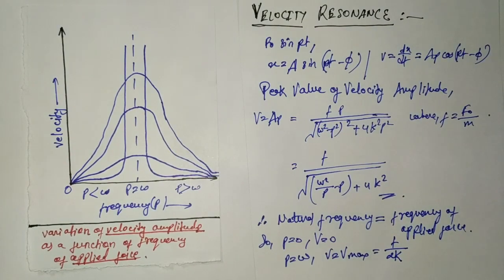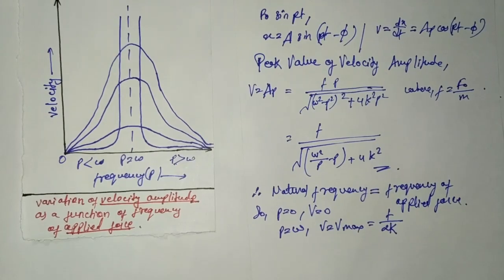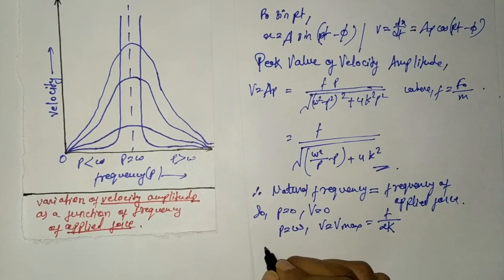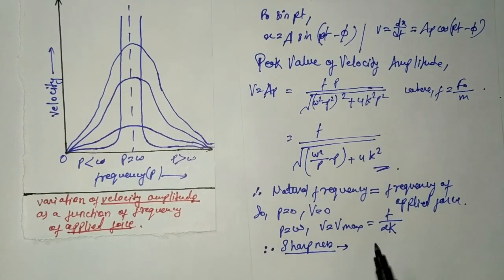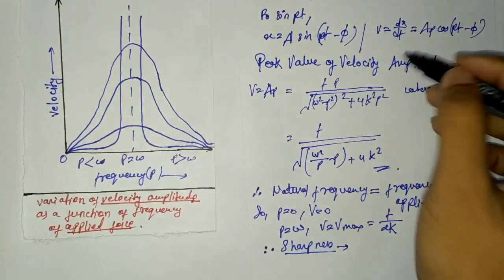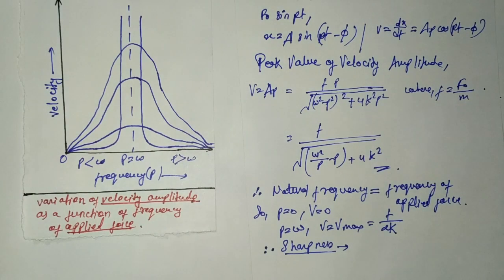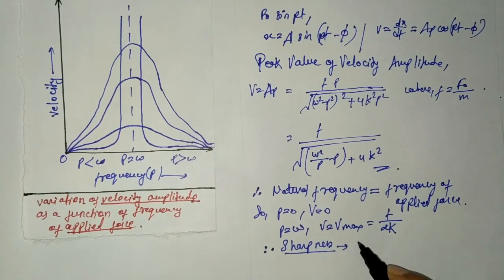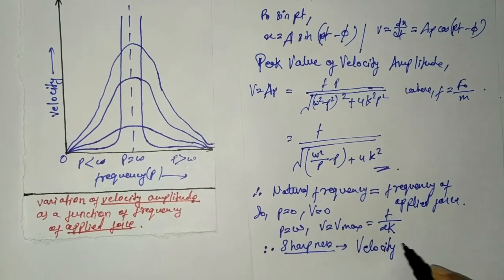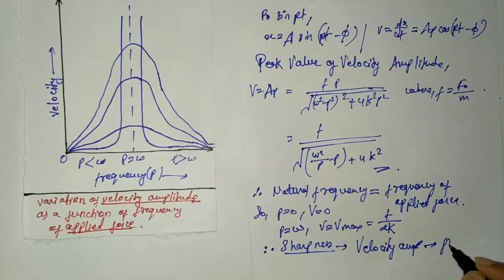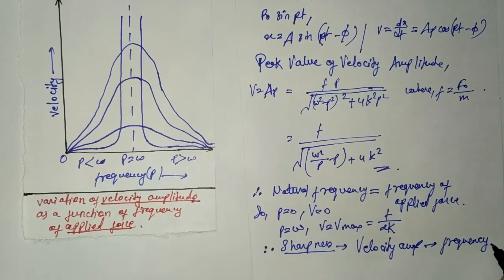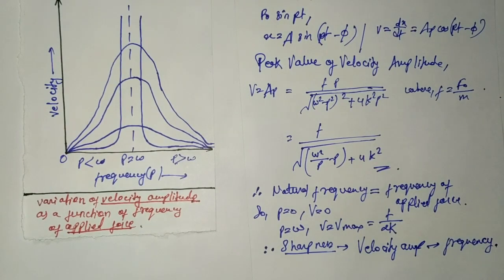The sharpness of velocity resonance may be defined as the rate of fall in velocity amplitude, or reduction in velocity amplitude, with the change of frequency of the applied force — that is, the change of velocity amplitude with the change of frequency of the applied force on each side of the resonance frequency.